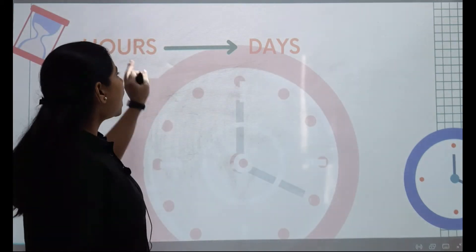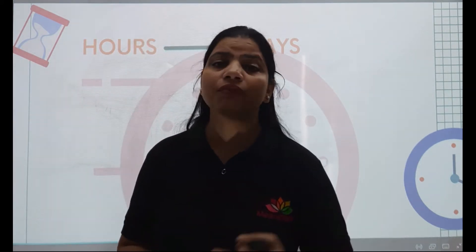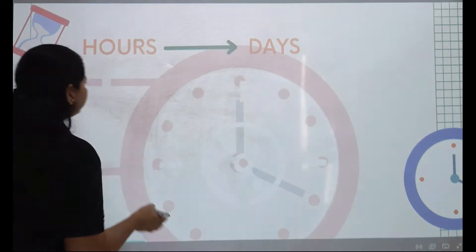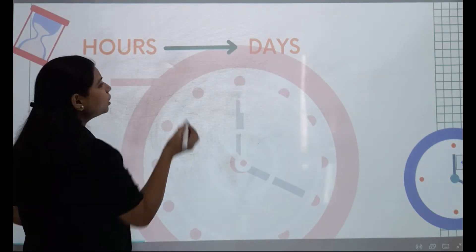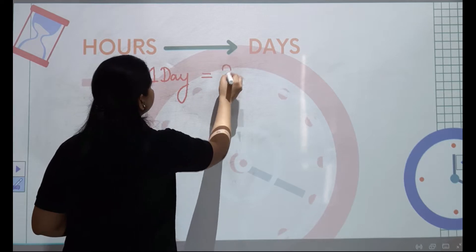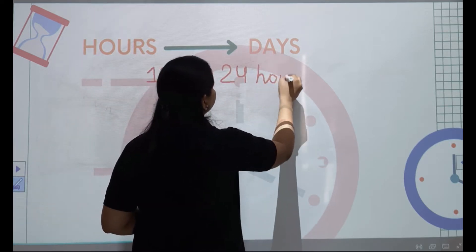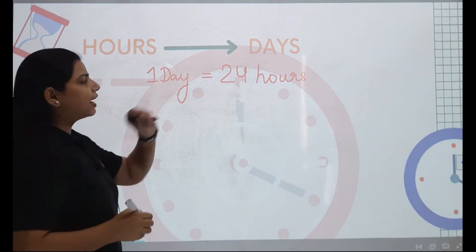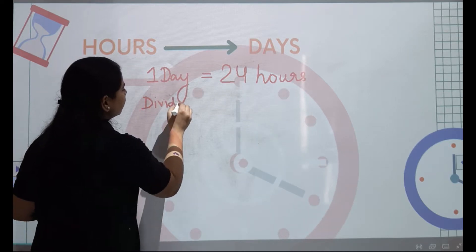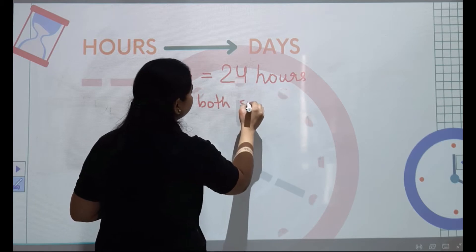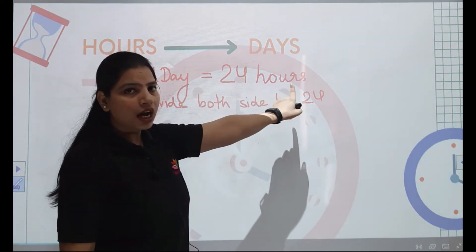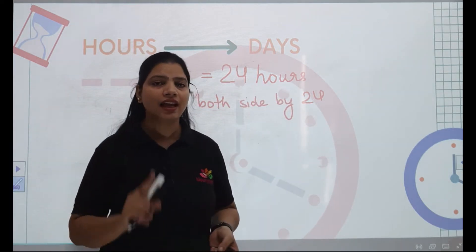We have to convert hours into days. We'll be given some number of hours and we have to find how many days correspond to those hours. For example, we know that one day is equal to 24 hours. If we divide both sides by 24, we want to know how many days are in one hour.